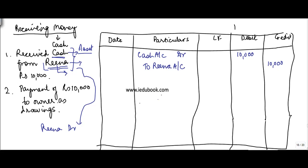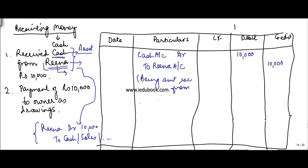Let's say it was 10,000 only. If she was given cash, it would have been cash, sales, or anything for that matter. So Rena's account is credited, and the narration written is: being amount received from Rena.